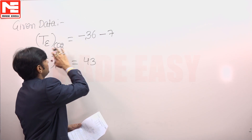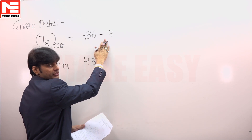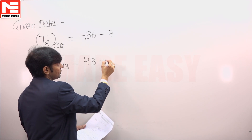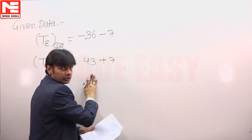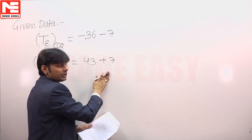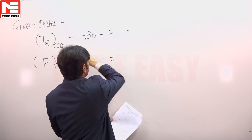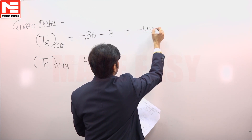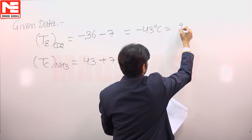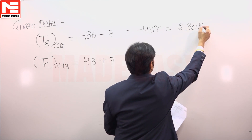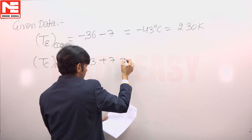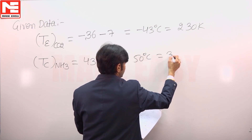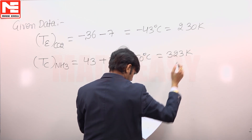So the evaporator temperature of CO2 is minus 36 minus 7, and the condenser temperature is 43 plus 7. Therefore, the evaporator temperature is minus 43 degrees Celsius, equal to 230 Kelvin, and the condenser temperature is 50 degrees Celsius, which is nearly equal to 323 Kelvin.